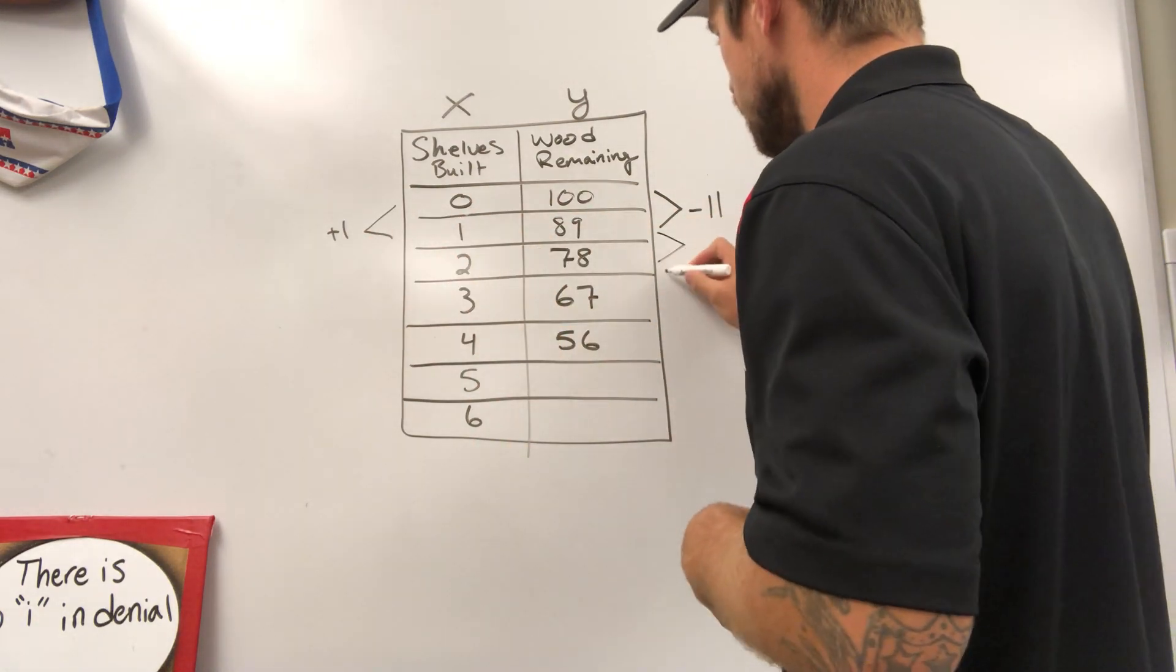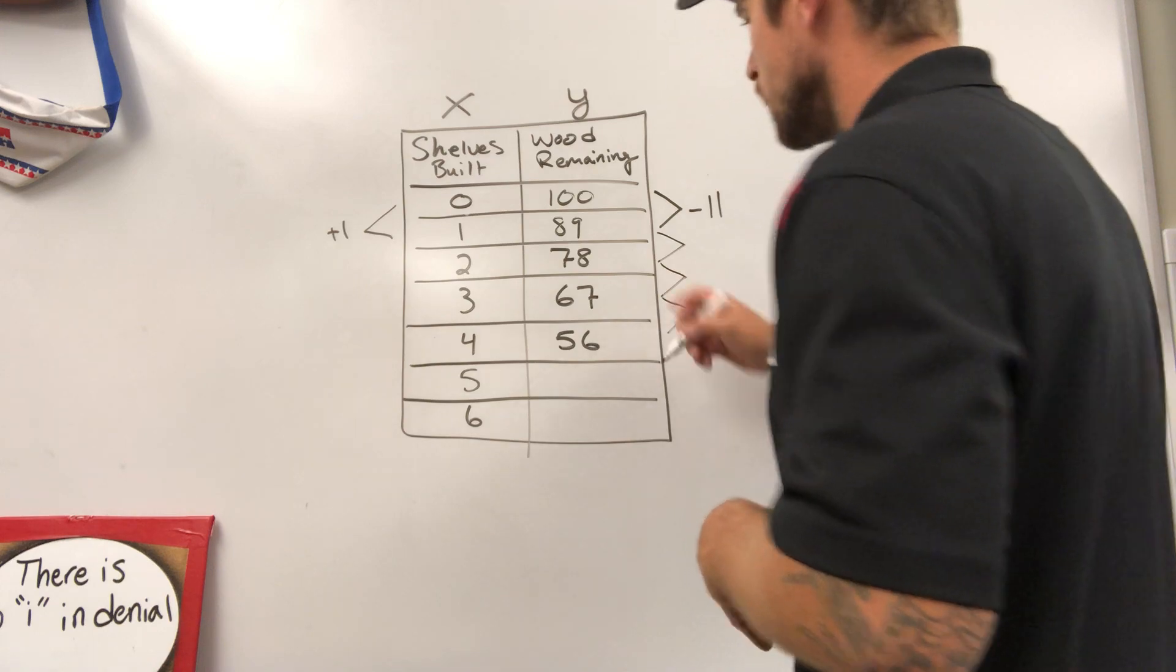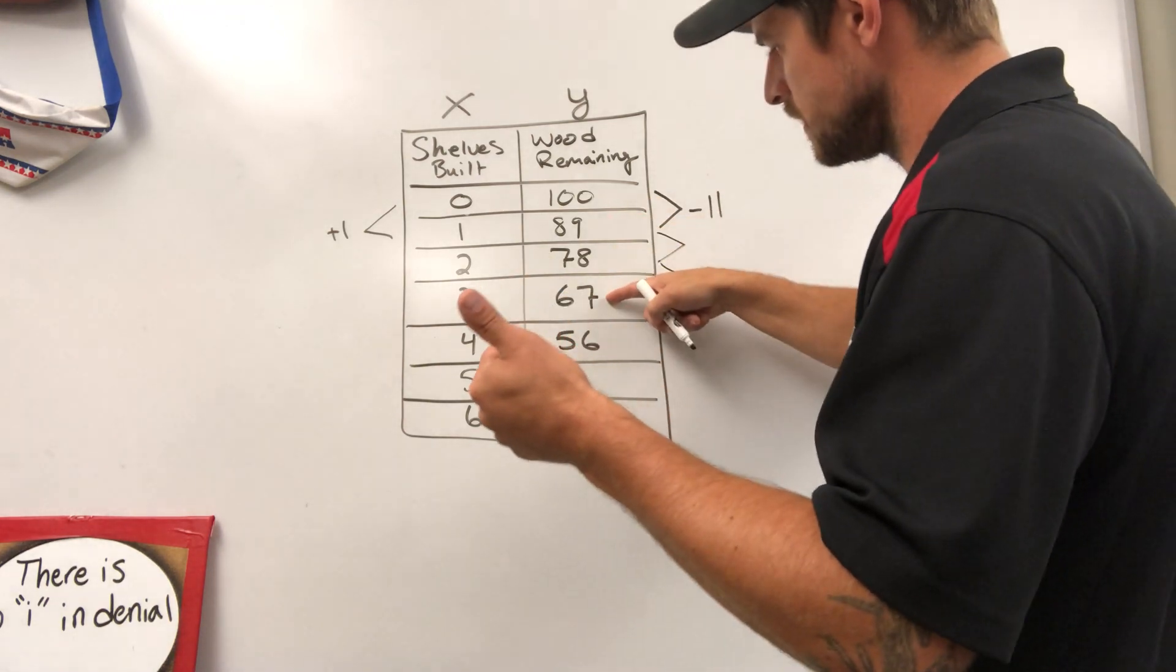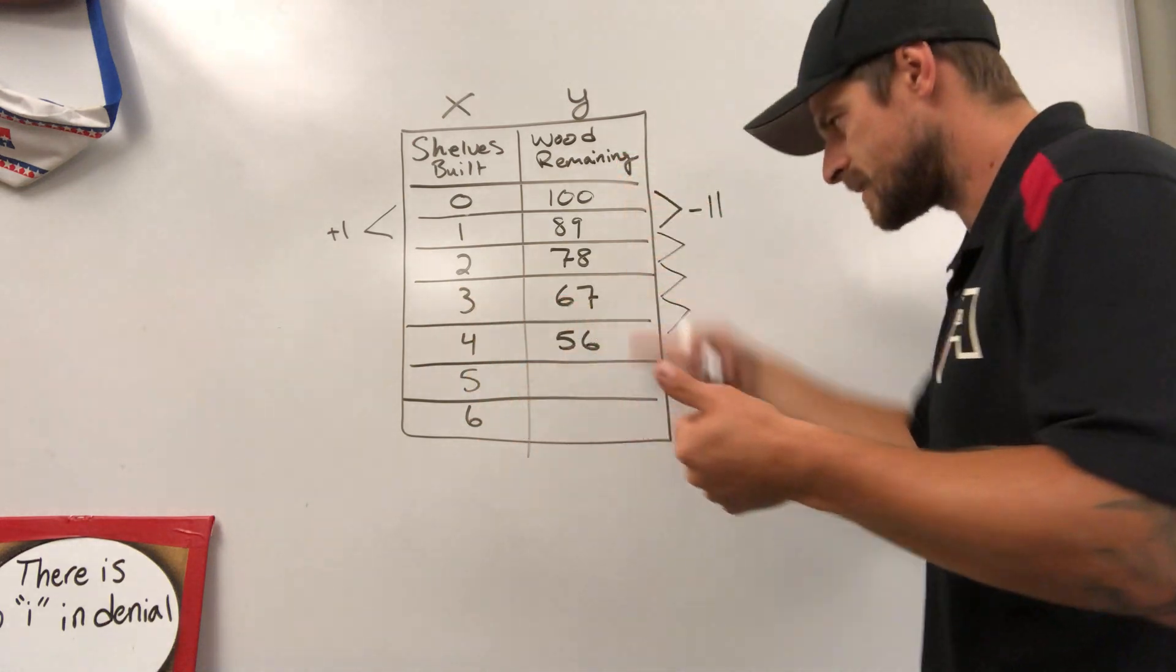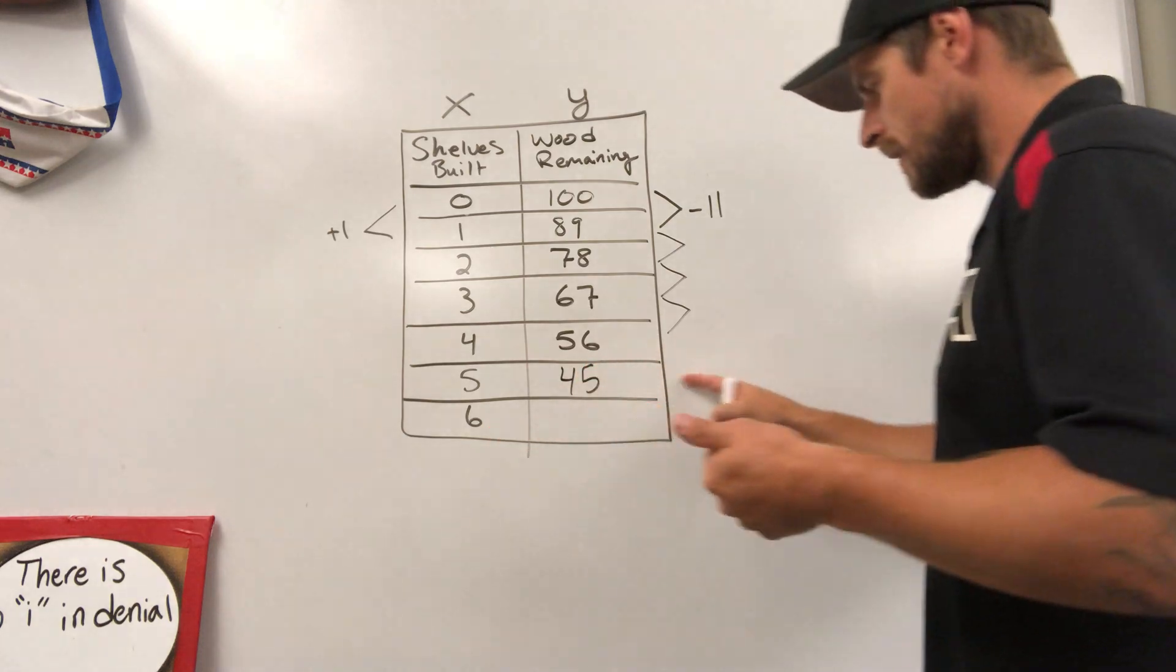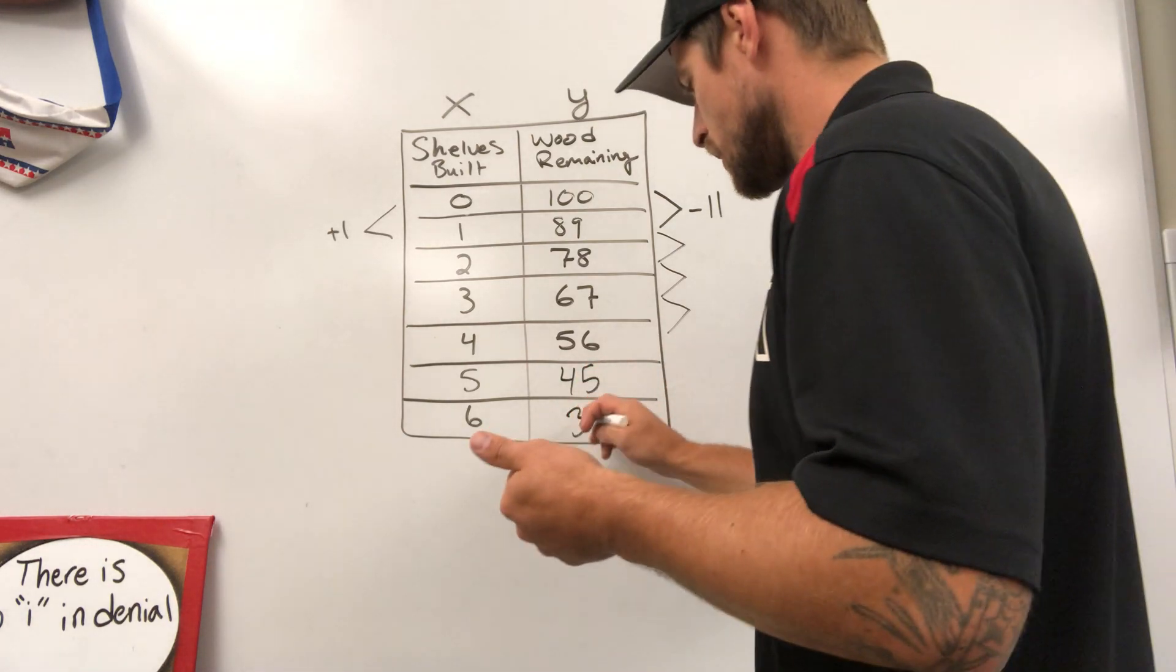We want to make sure it's consistent throughout all of these. So I'm just going to take a quick peek and make sure I'm going down 11 each time. Yes, it is consistent. So if I go down 11 more, that would take me to 45. Down another 11, that would take me to 34.